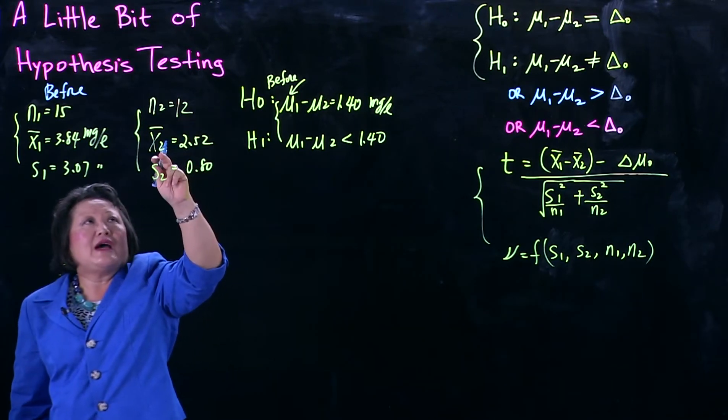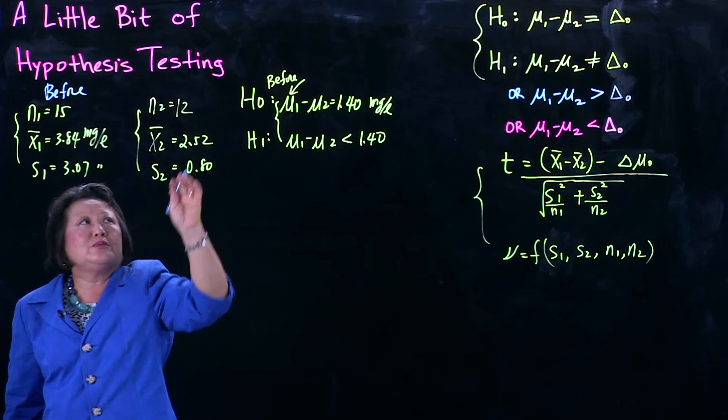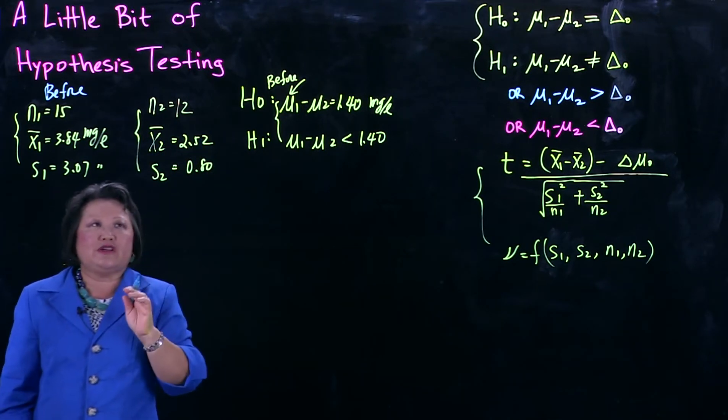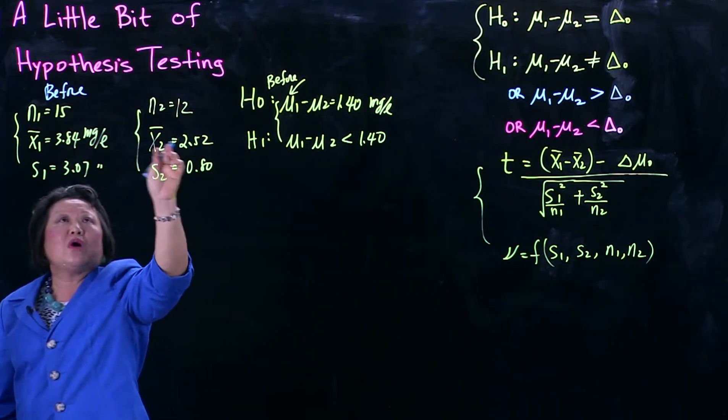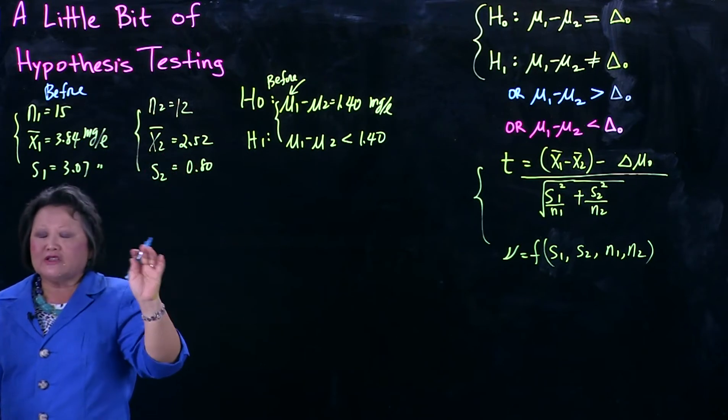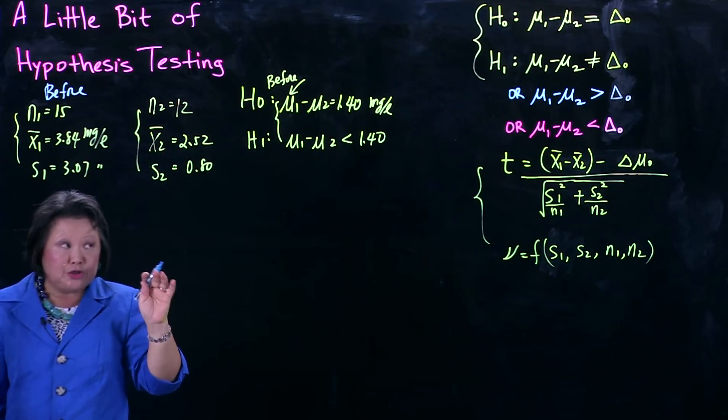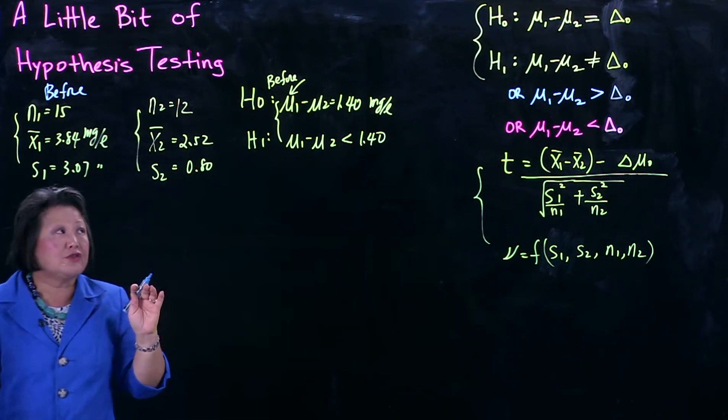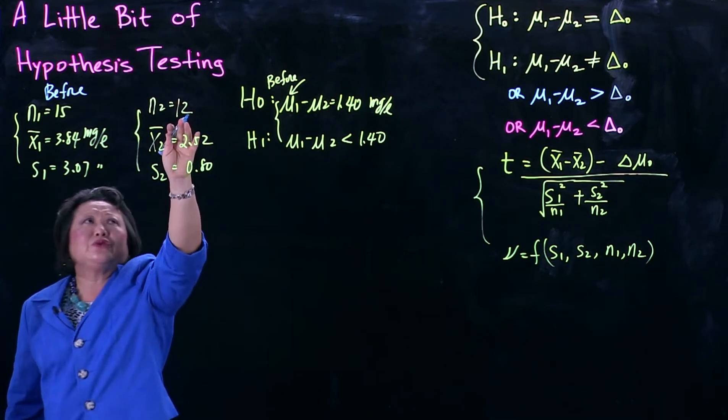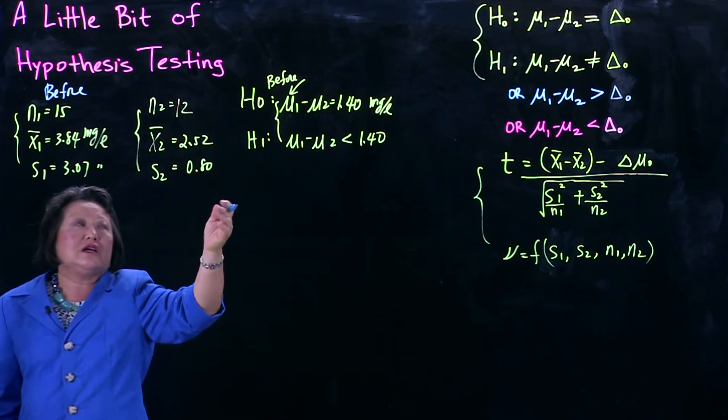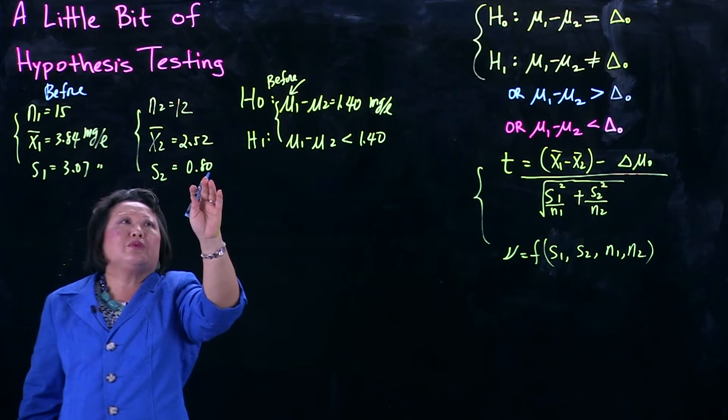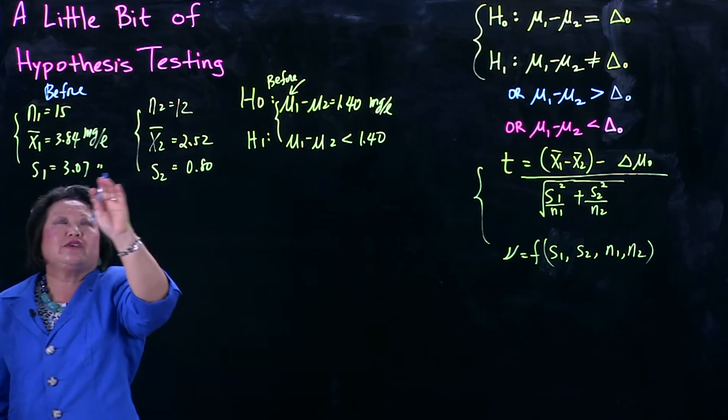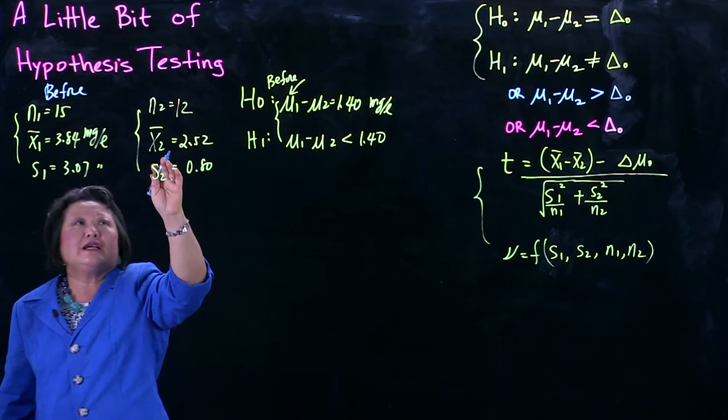So afterwards, my X2 bar is 2.52. On the surface, nominally, it's a reduction of 1.3 or so. But don't take that as phase reduction. You want to do either a confidence interval construction or do a testing. Let's use the 12 samples. Here's the S2 of 0.8, rather less variation now.